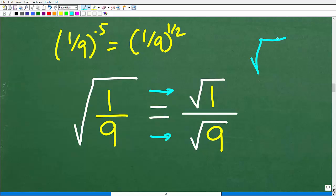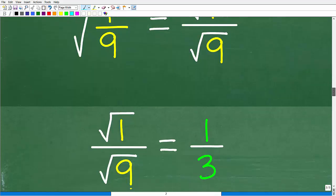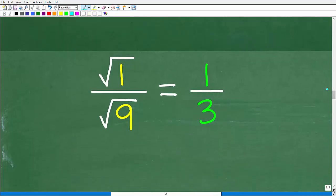This is a formal property of radicals. This little symbol in math is called a radical and square roots. Now that we understand how to apply this property, we can easily figure this out. We have the square root of 1, which is 1, and the square root of 9, which is 3.